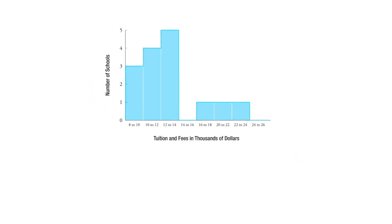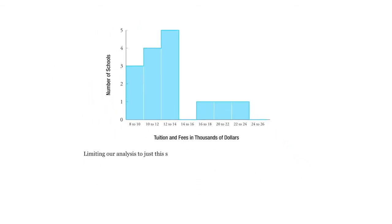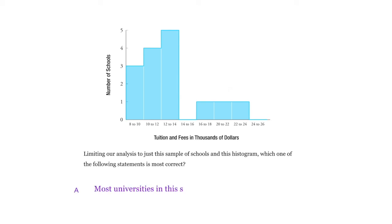So the question is, limiting our analysis to just a sample of schools and this histogram, which one of the following statements is most correct? And the correct answer is this one: most universities in this set cost less than $14,001 per year, because most of them are here.